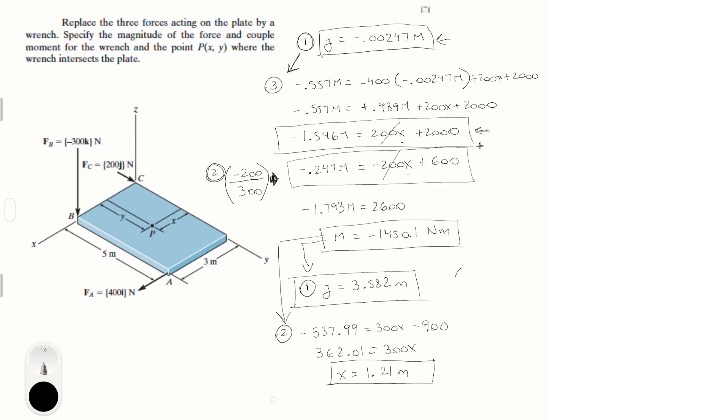The X and Y point equals 1.206 meters and 3.582 meters. That is the point for the X and Y. The magnitude of the moment is 1450.1 Newton-meters, and the resultant force has a magnitude of 538.52 Newtons. So final answer, we found the point and the magnitudes.